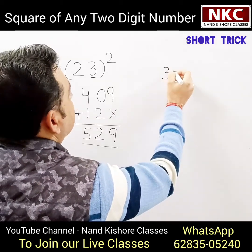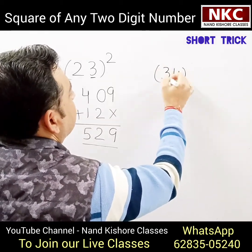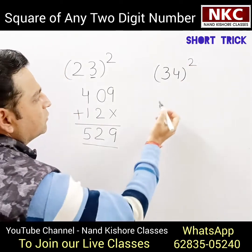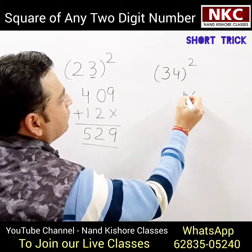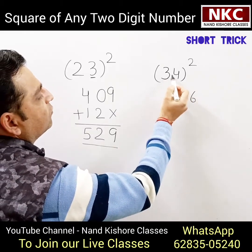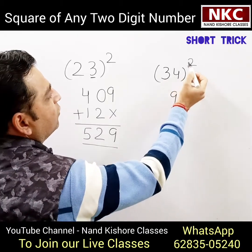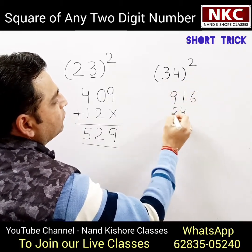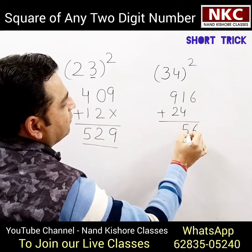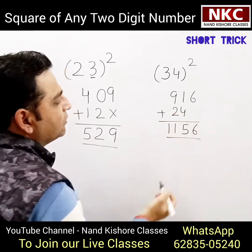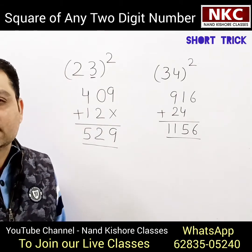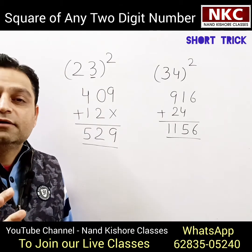Let's suppose 34 square. You just need to do the square of both terms: 4 square is 16, 3 square is 9. Then multiply them: 4 threes are 12, 12 times 2 is 24. Just add them — 4 plus 1 is 5, 9 and 2 makes 11. So 34 square is 1156.